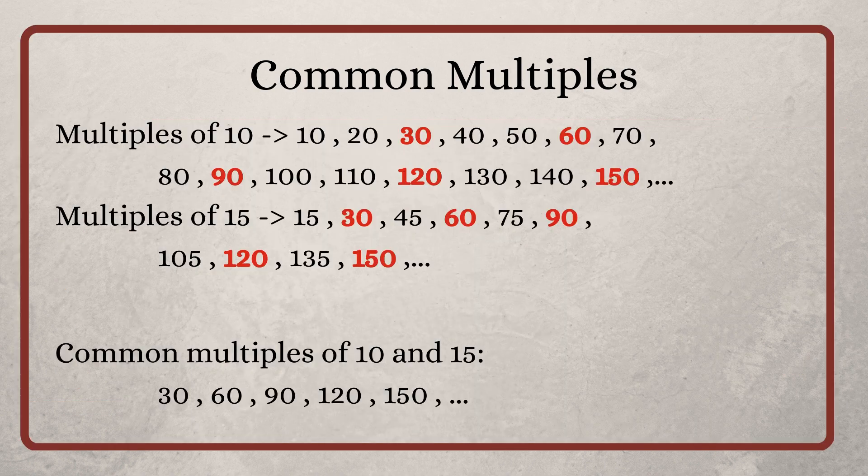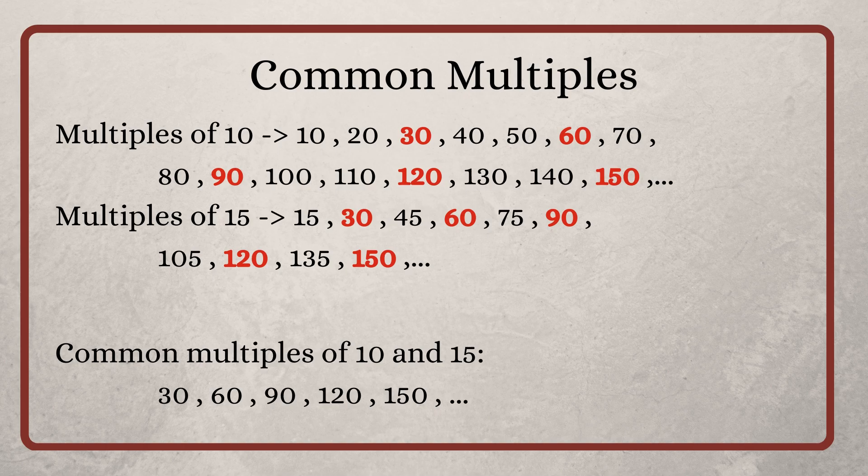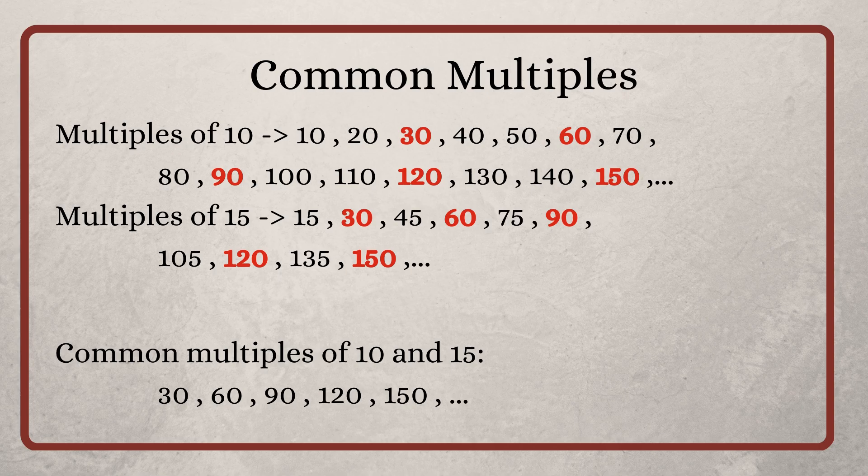But are 30 and 60 the only common multiples? The answer is no. Common multiples also keep going on and on. Like in this case 30, 60, 90, 120 and so on.